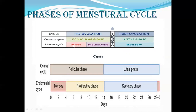The endometrial cycle can be divided into the menstrual phase lasting one to five days, the proliferative phase from day 4 to 14 (menses are often included within the proliferative phase because proliferation starts early), and the secretory phase from day 14 to 28. The ovarian cycle in a 28-day cycle: the first 14 days is the follicular phase, then ovulation, followed by the luteal phase from day 14 to 28.